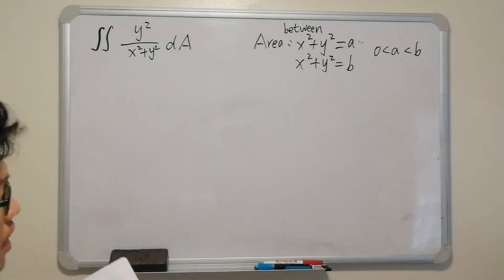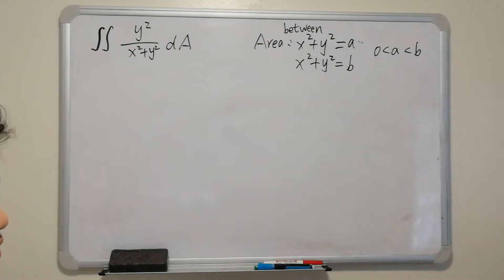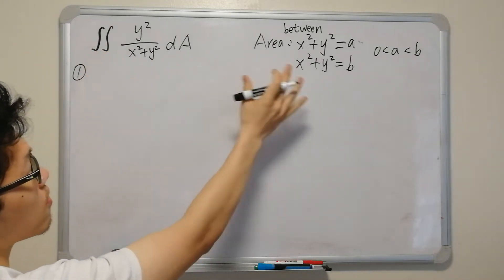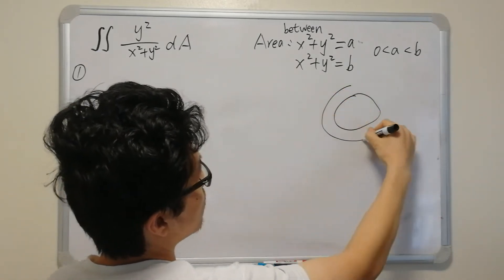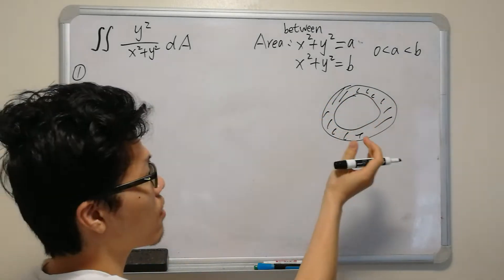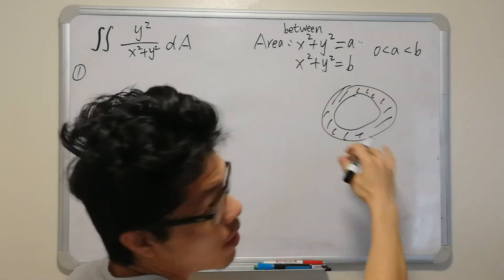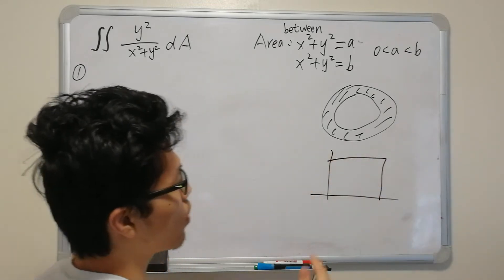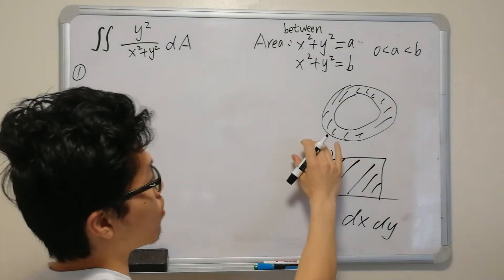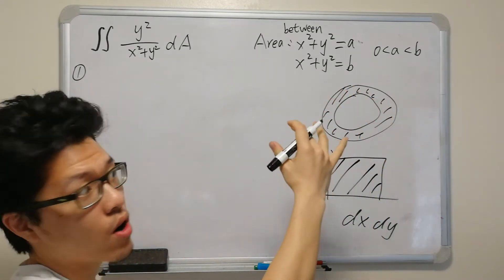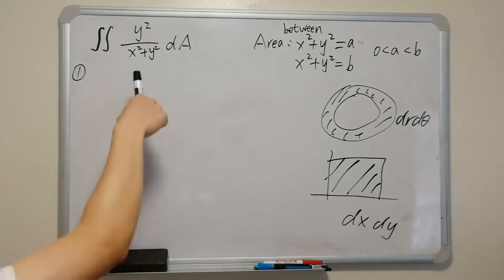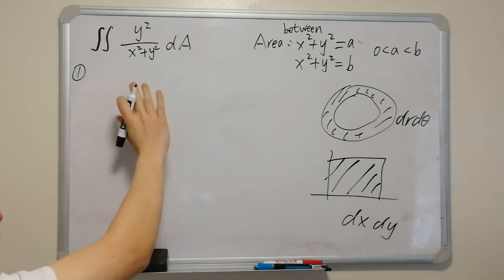To evaluate this double integral in polar coordinates, the first step is to write the integral in polar form. For a circular or ring-shaped area, we use polar coordinates with dr dθ instead of dx dy. So we need to rewrite this double integral in polar coordinates first.